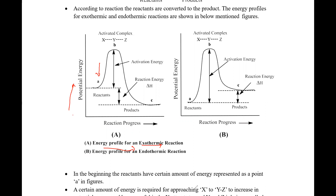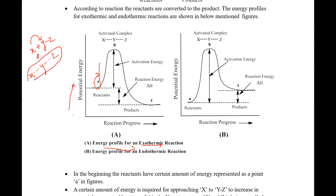When X approaches YZ, a certain point of activation energy is required. This is the intermediate state and it has the highest energy on the energy profile diagram.